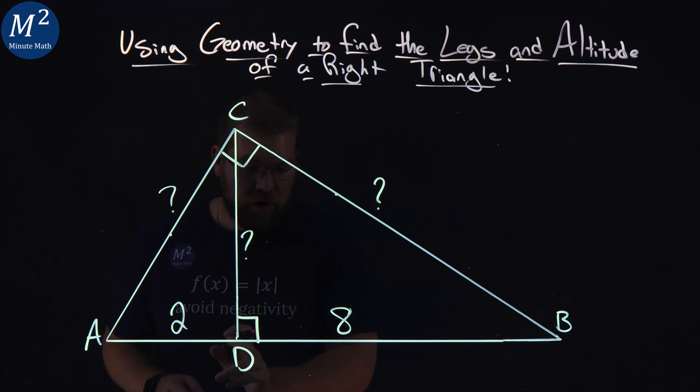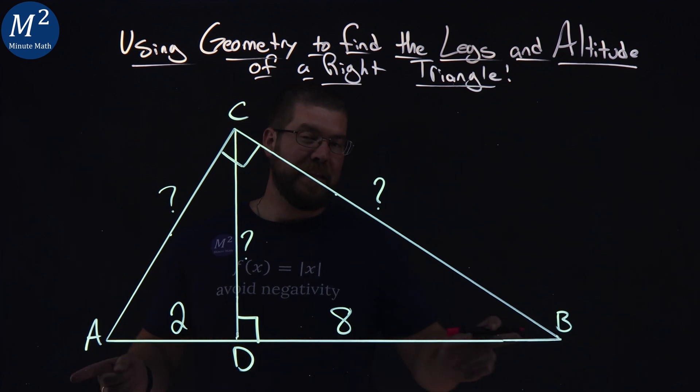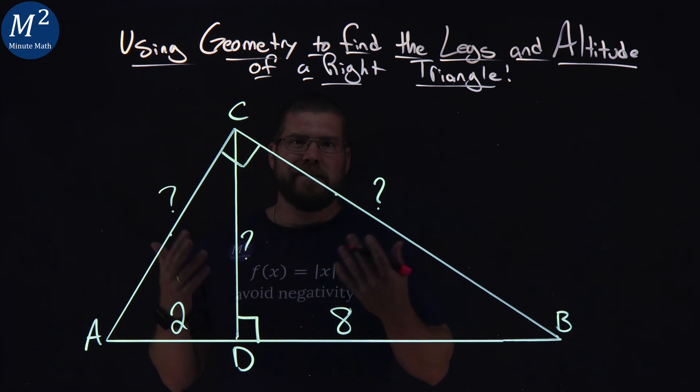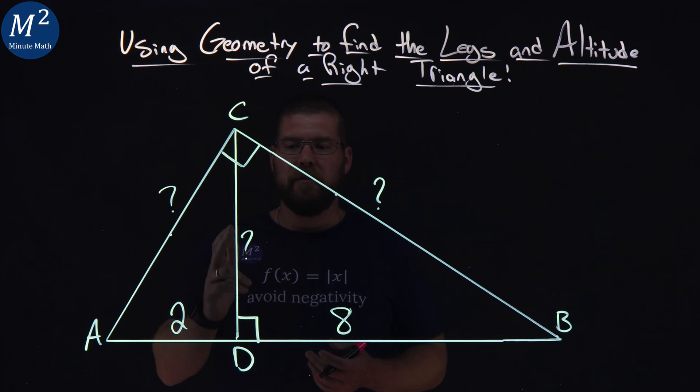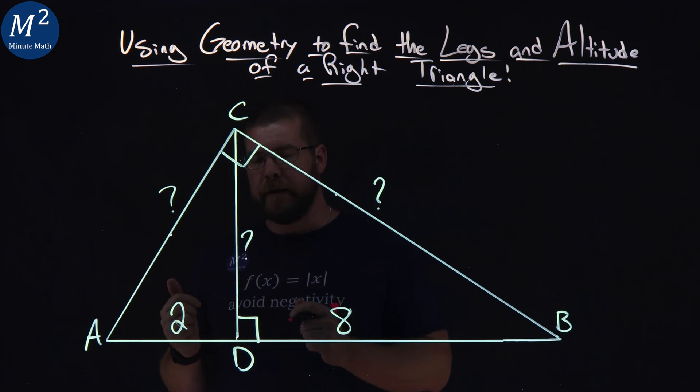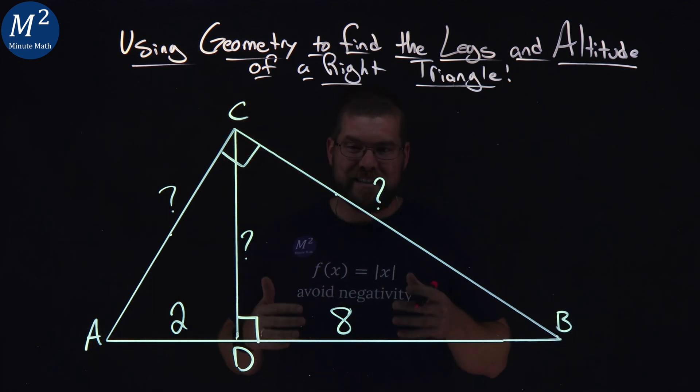And then we have an altitude that was drawn that created these two parts here, which is the information we want to find for missing parts of the triangle. We have a height right here and the other two legs of the triangle. We want to see if we can find those values.